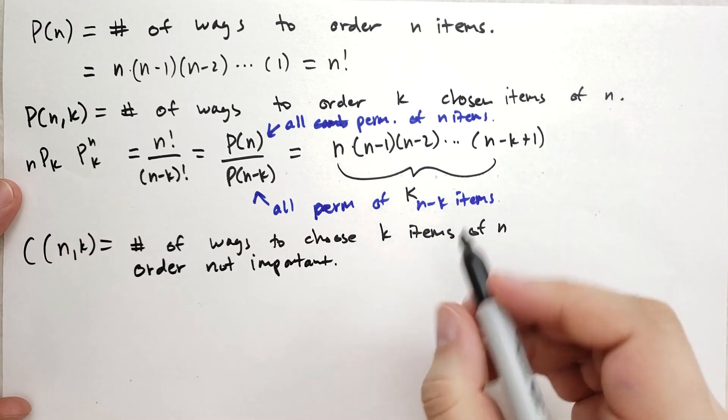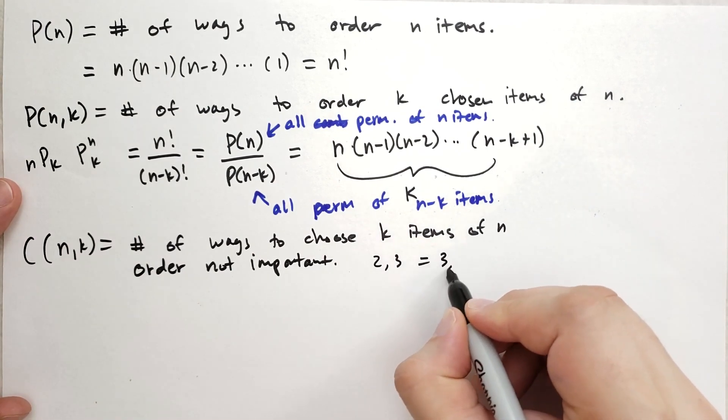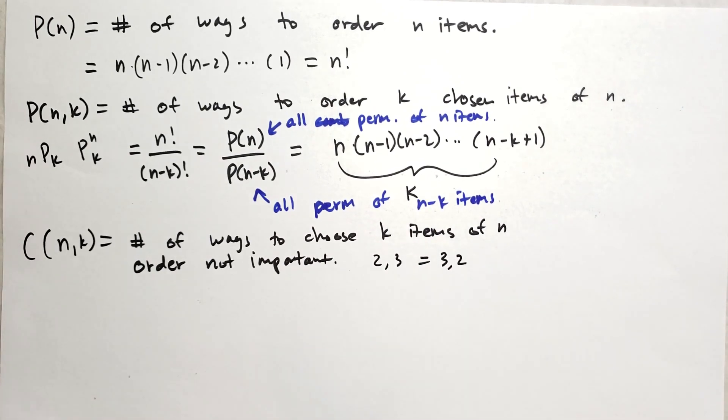And what I mean by order is not important, that means 2,3 is the same as 3,2. Those are the identical in this way. And the reason why order isn't important arises often in quantum mechanics because you cannot distinguish the particles or the energy packets. There's no distinction. They're the same.